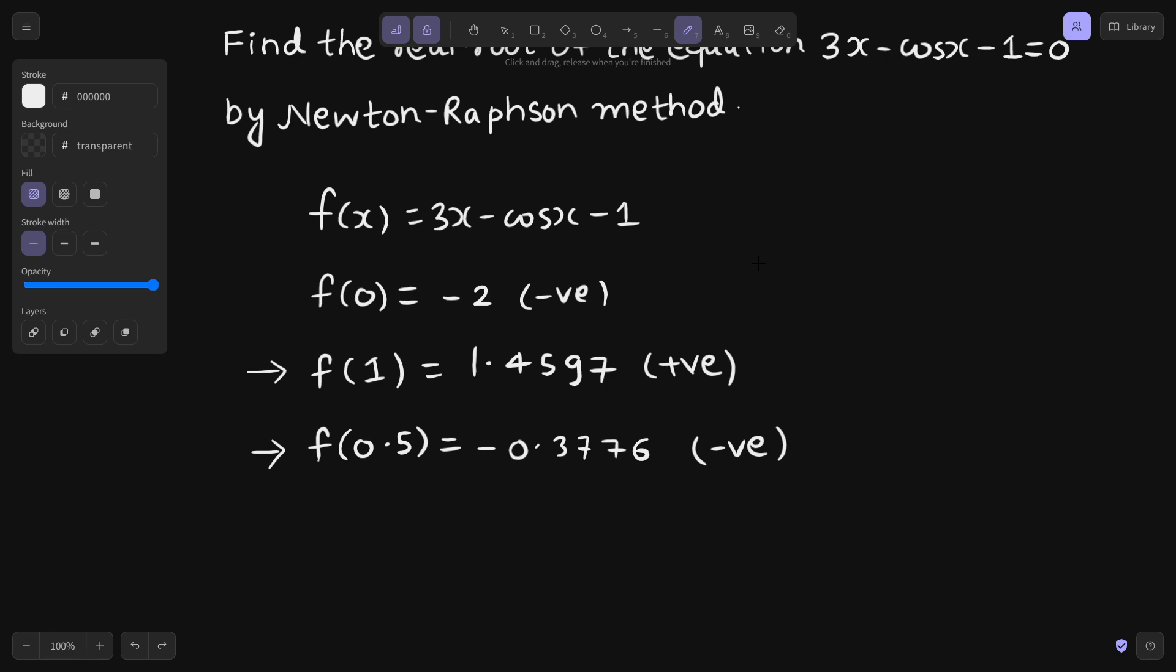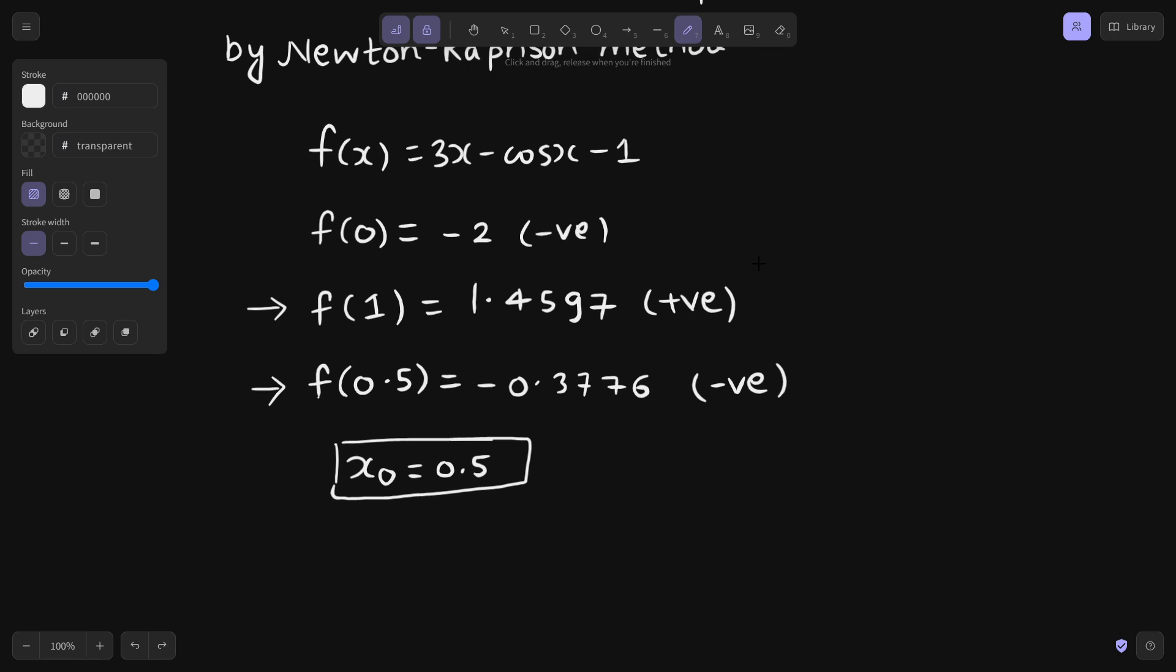If I just take the length and not the sign, 1.4 is greater than 0.3. That is, this is farther from 0 as compared to this one. So I am taking x0 as 0.5 because at 0.5 the value which we are getting which is minus 0.3 is closer to 0. Now it is completely your choice again. You can take any value between 0.5 and 1 also as x0. In my textbook which I am referring to, they have taken 0.6 as the x0.